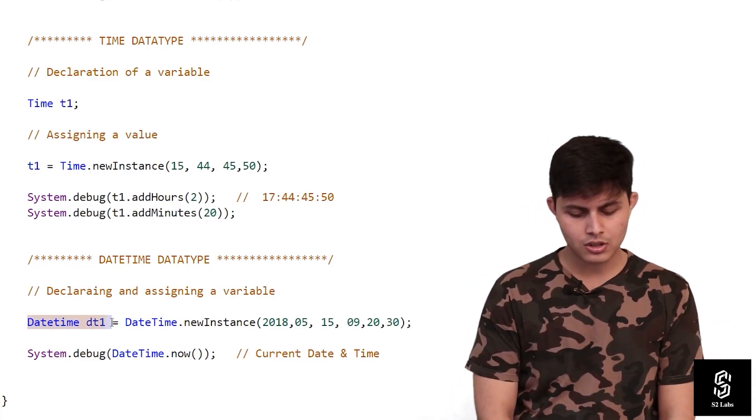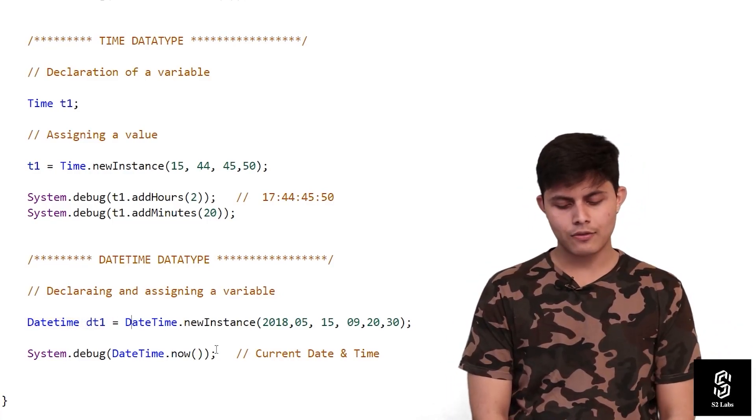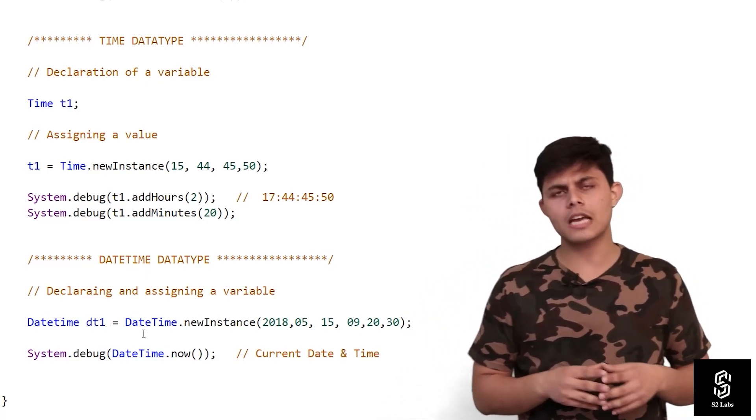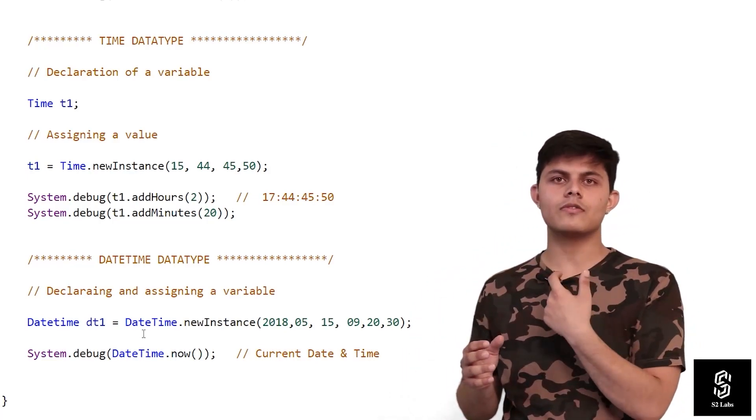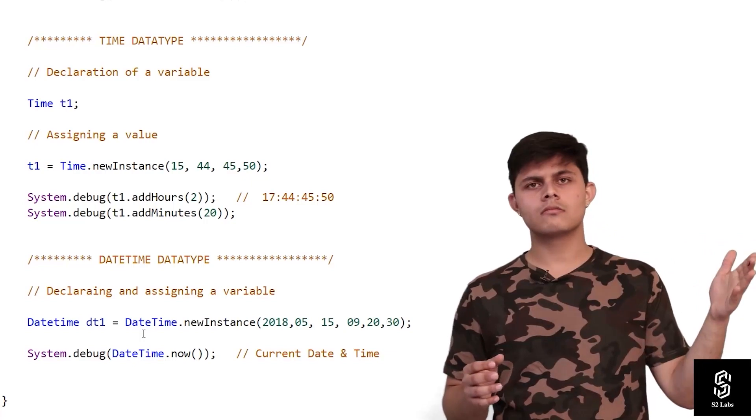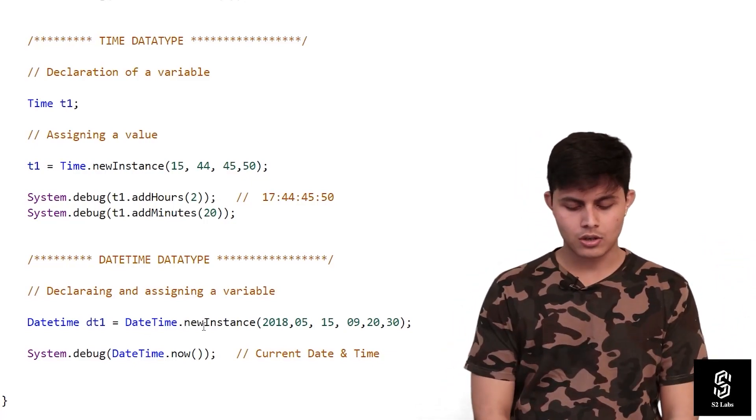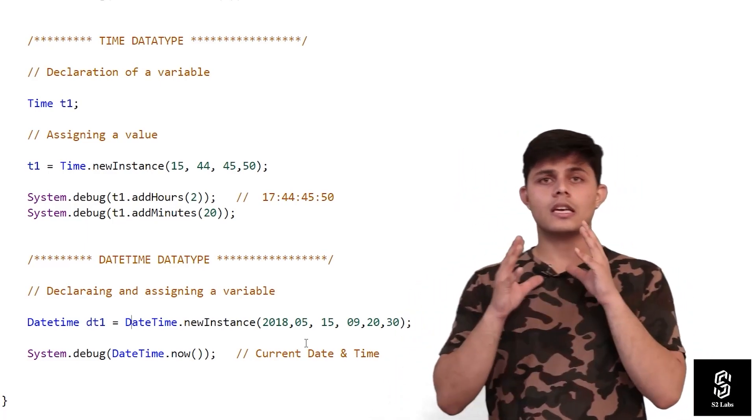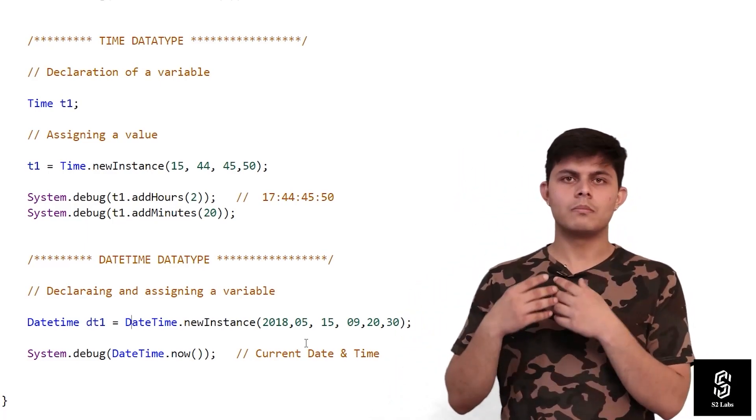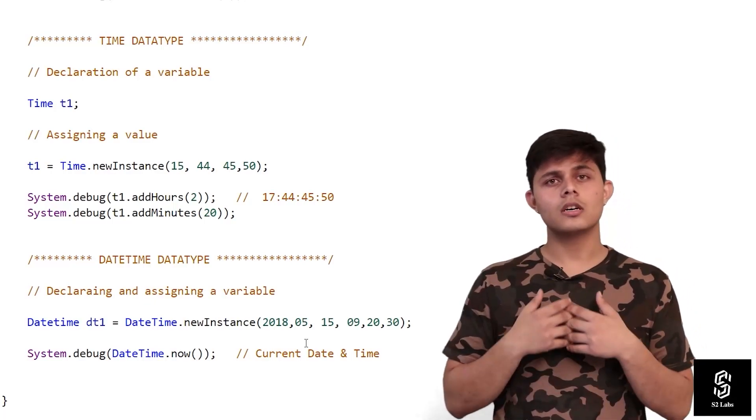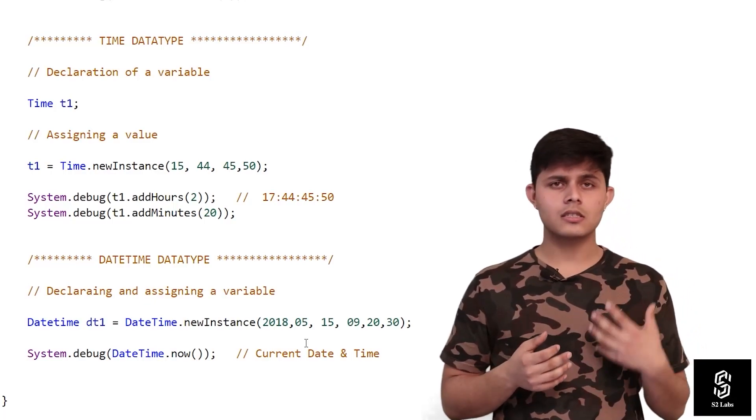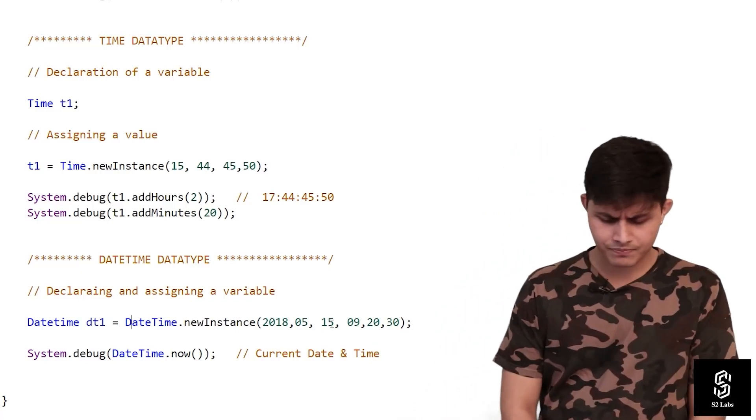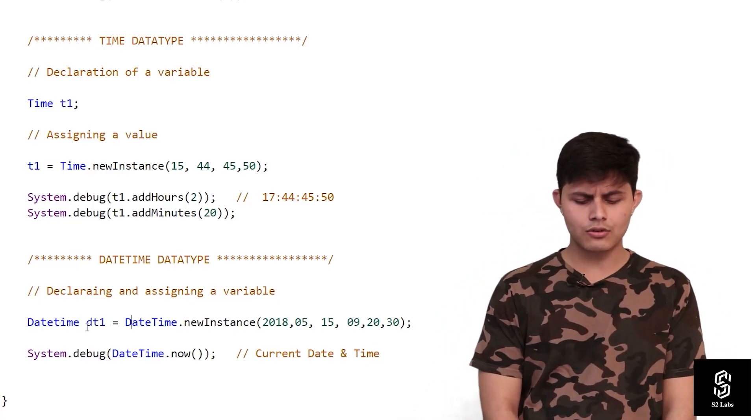Here's how we use it: DateTime dt1. To assign a value, use the DateTime.newInstance() method which creates a DateTime value. DateTime.newInstance() takes six arguments: first is year, second is month, third is day, fourth is hours, fifth is minutes, and sixth is seconds. This combines everything into one and assigns it to the DateTime variable.